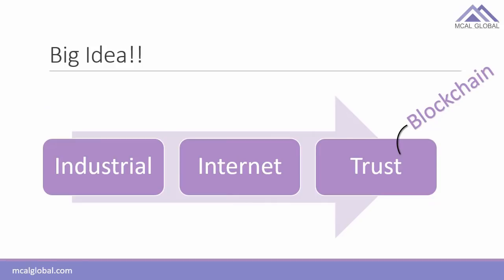The industrial revolution reduced the gap of power — we could start doing things faster and quicker with the invention of the steam engine. The internet reduced the gap of distance — people from across the globe could communicate and interact without having to be present face to face. Now blockchain is going to reduce the gap of trust from society. It's a big idea.